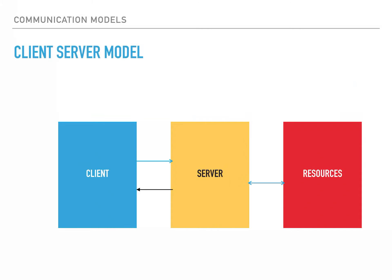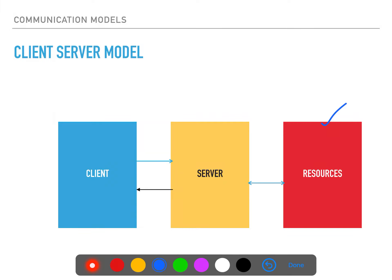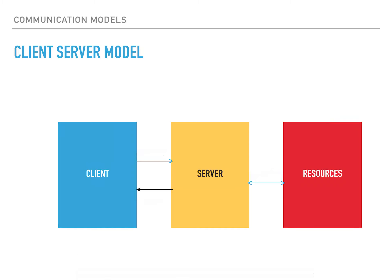The first model is the client-server model, which we have been using over a long period of time. Most computing aspects started with client-server communication. We have resources and a server, where the server is connected with resources in a bi-directional way. Whenever a client sends a request to the server, the server responds back. This is the simplest model, decentralizing the server, client, and resources into separate tiers.